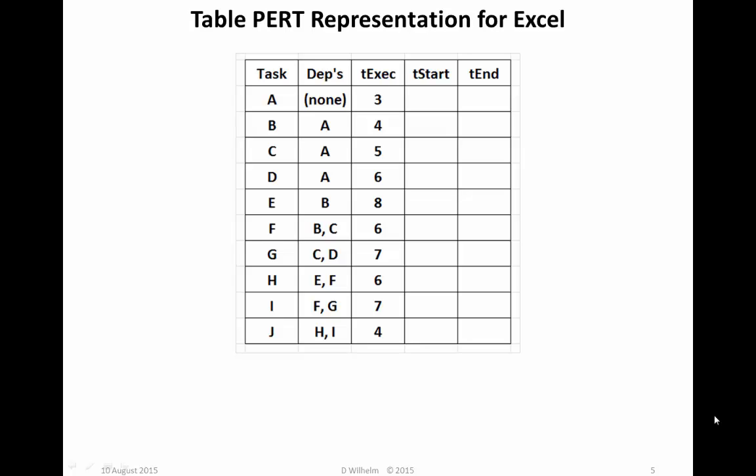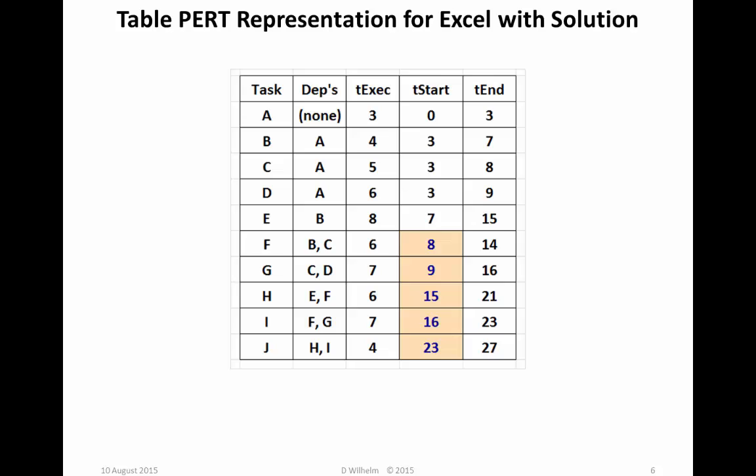A useful simplification that can be made when doing the PERT calculations simply in Excel is to identify the start and end tasks. In particular, have a single identified beginning task and a single identified ending task. In this case, our case for this example, task A is the initial task and task J is the final task. Just a reminder, what we should have is this table. And tStart of A is 0, end is 3, and on down through task J, where the Time Start is 23, and the Time End is 27.